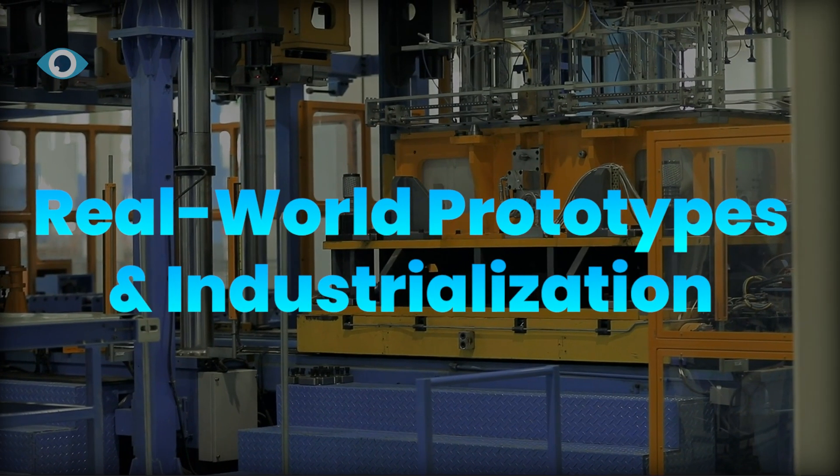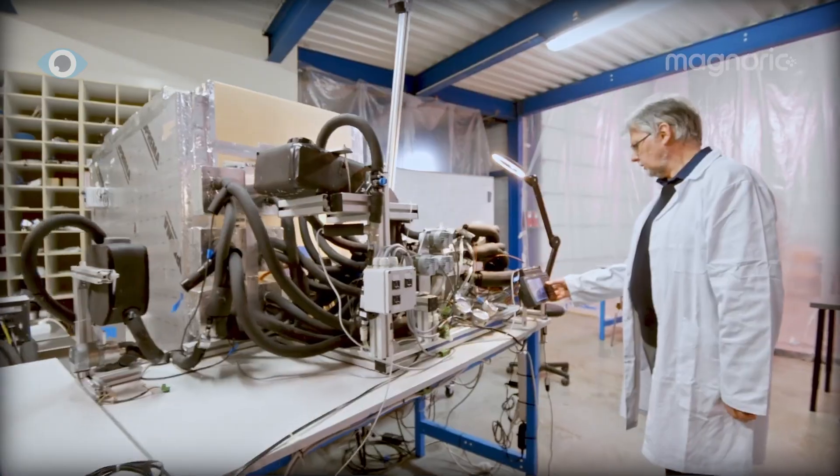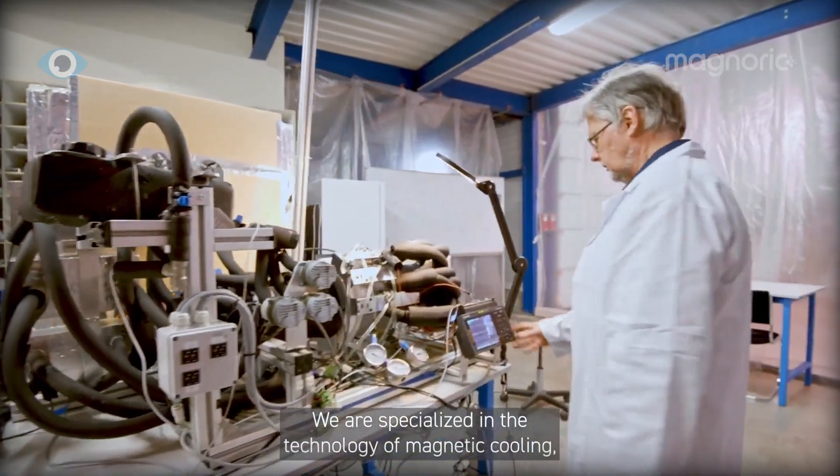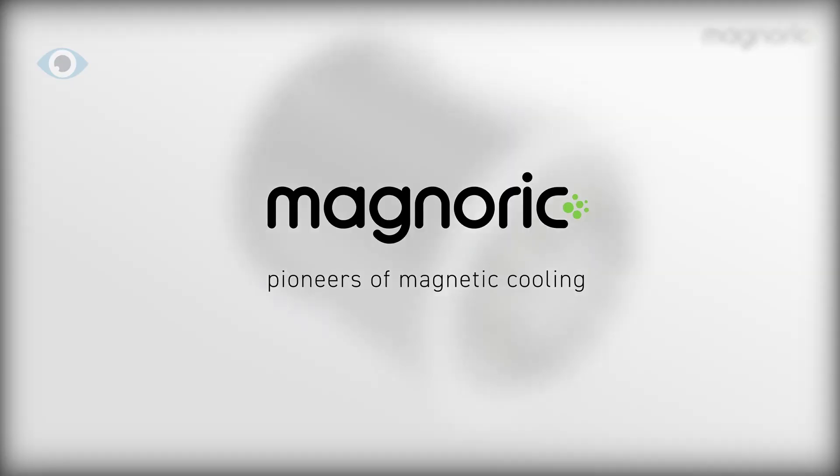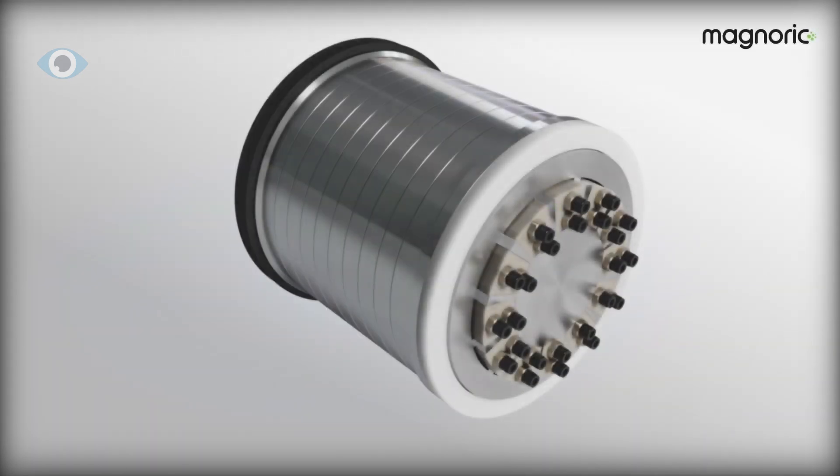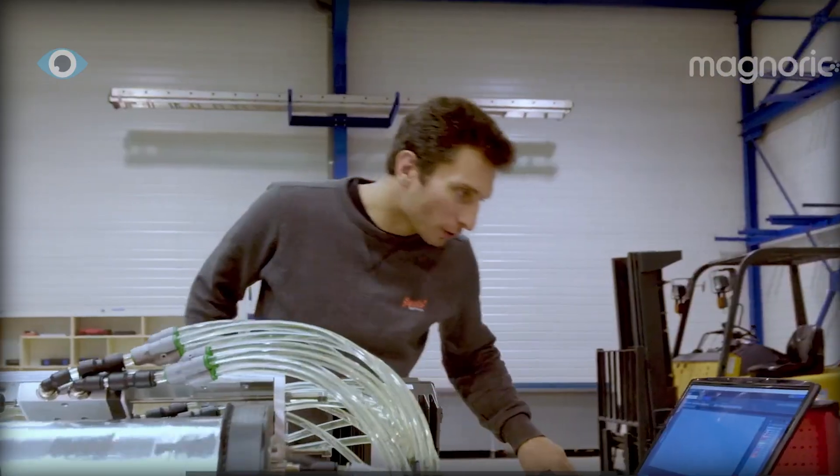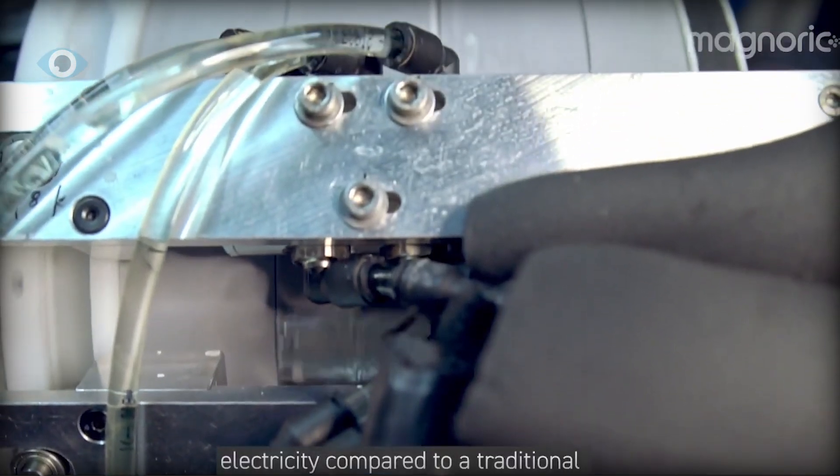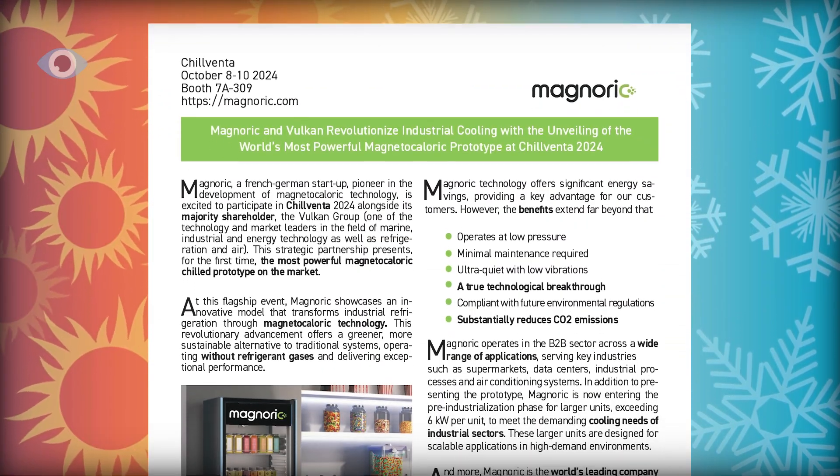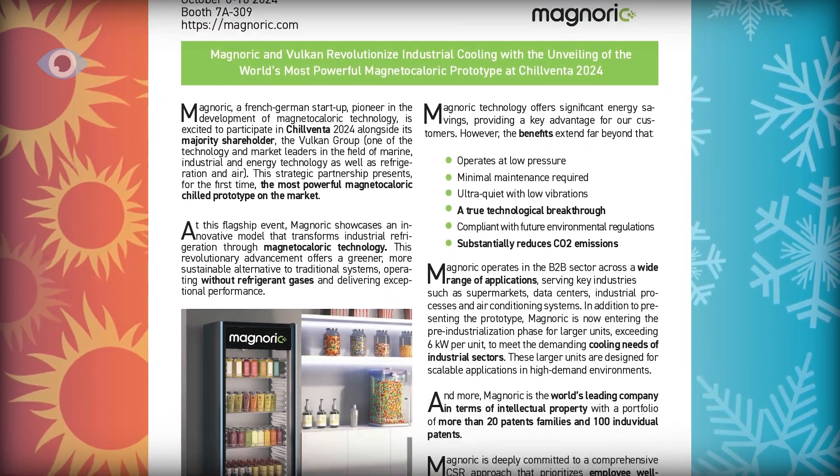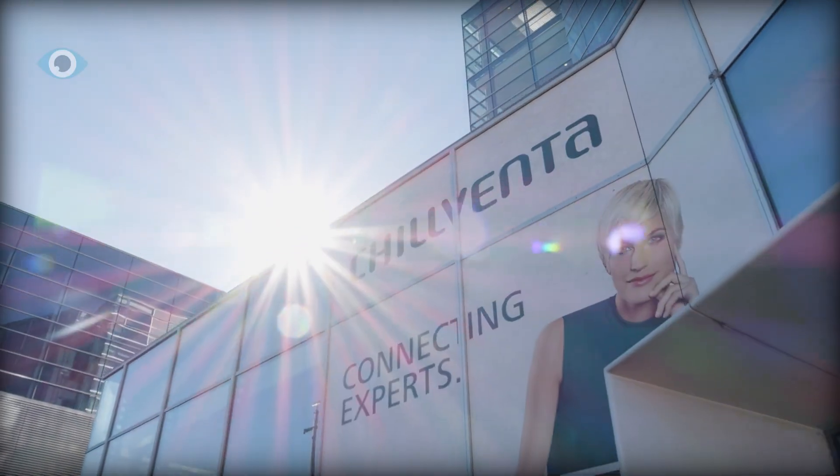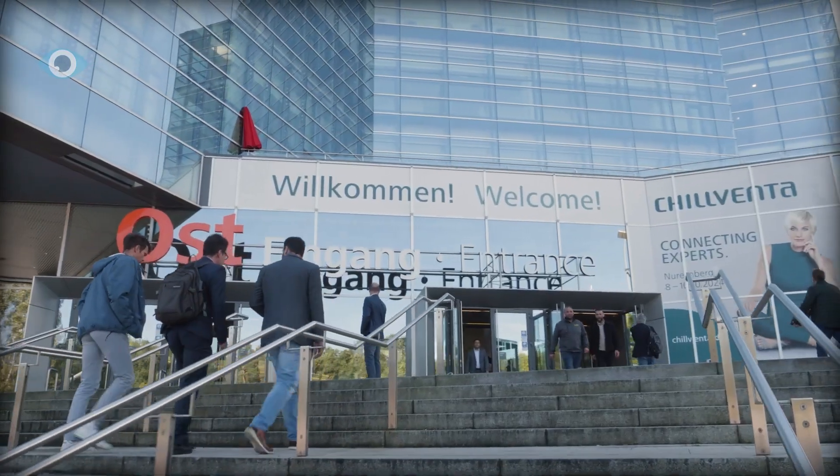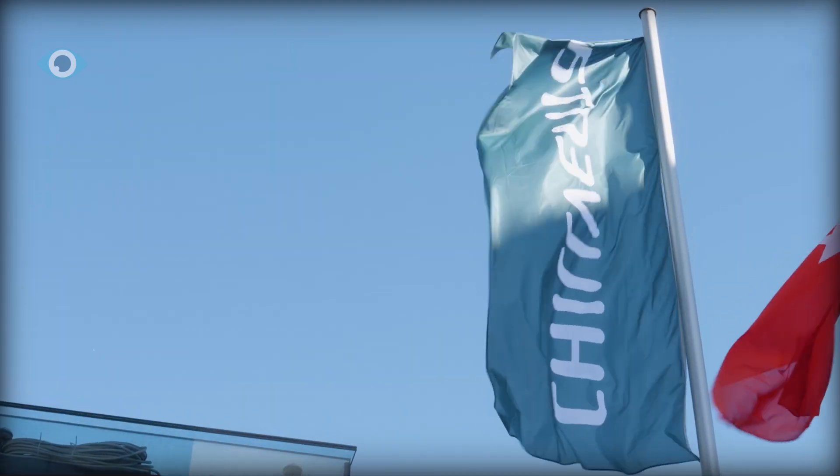Real-world prototypes and industrialization. Magnetic cooling has already made it out of the lab in Europe. Magnoric, a French-German startup, has built commercial prototypes of beverage coolers and refrigerator cabinets. In 2024, they unveiled a working display at Chilventa, a major heating and cooling tech expo. Their goal? Launch large-scale units, 6 kilowatts plus,